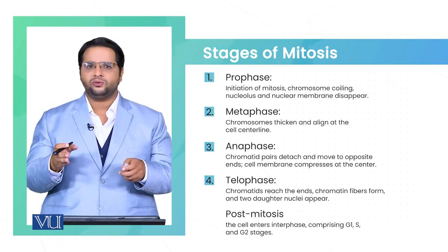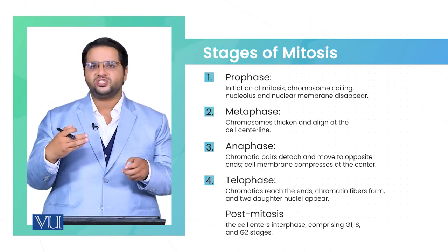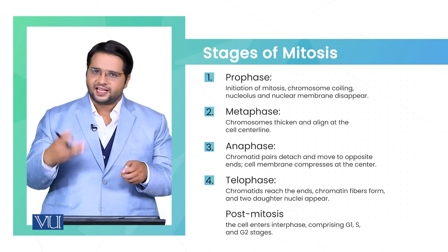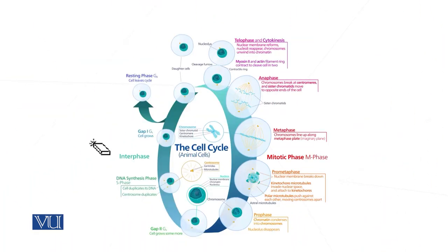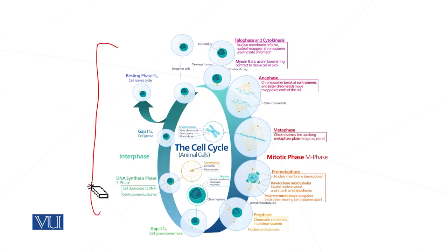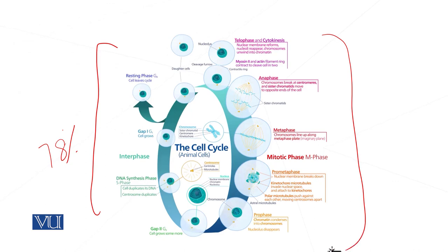Now I am going to explain these stages of mitosis visually through a diagram. You can see that 78% of the cell cycle consists of interphase, but our focus is the mitosis stages. Mitosis consists of the different phases we have discussed so far.